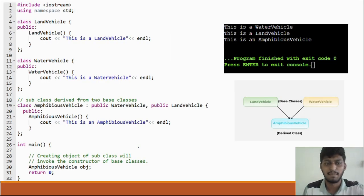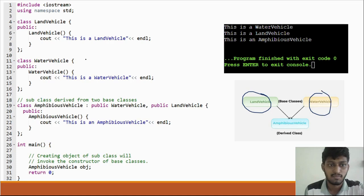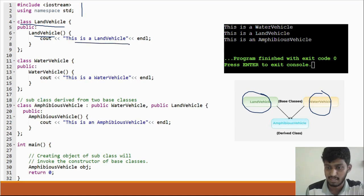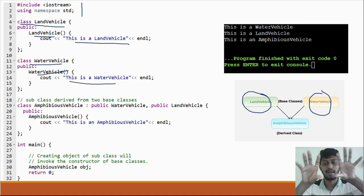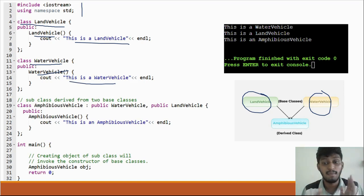Here is an example with two base classes. One class is land vehicle and another class is water vehicle. I have made a constructor for land vehicle and similarly for water vehicle. I have made two base classes. Now we will derive from these. In multiple inheritance, the derived class has to list both base classes.